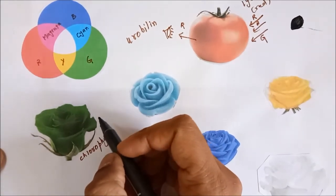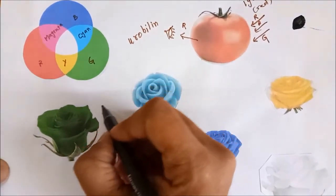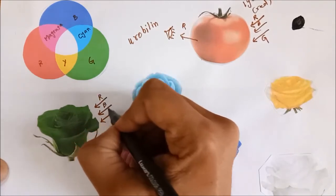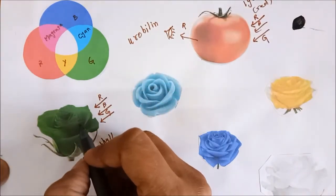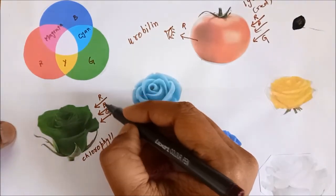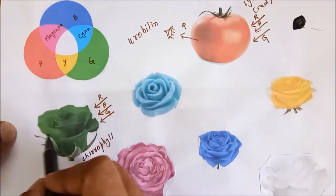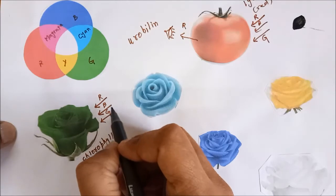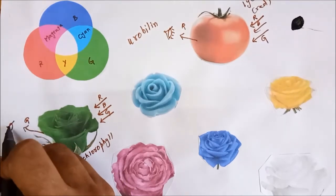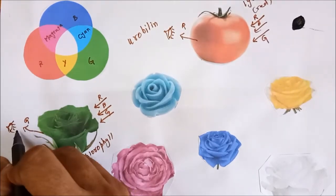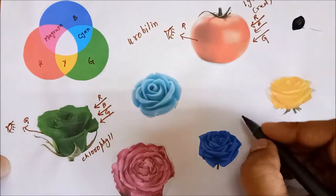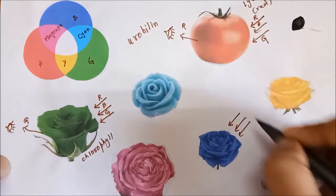Let's understand why this rose flower appears green. We impart white light — red, blue, and green — on it. The chlorophyll pigments present in the flower absorb red and blue color. They do not absorb green, so green color is reflected and finally reaches our eye. We perceive the green color and we see the rose as green.